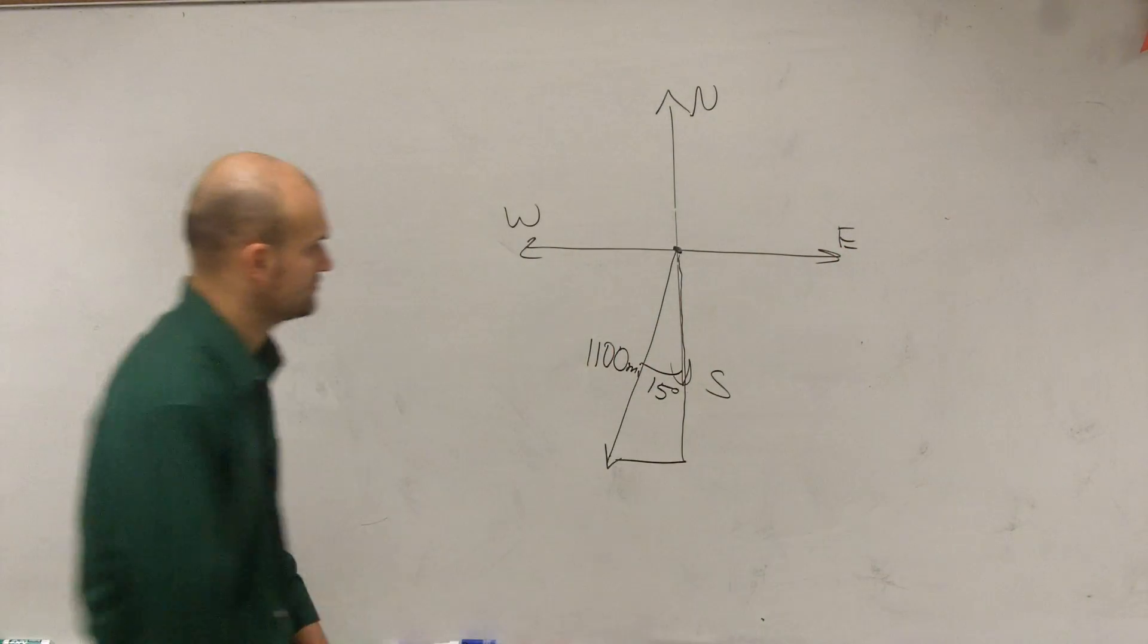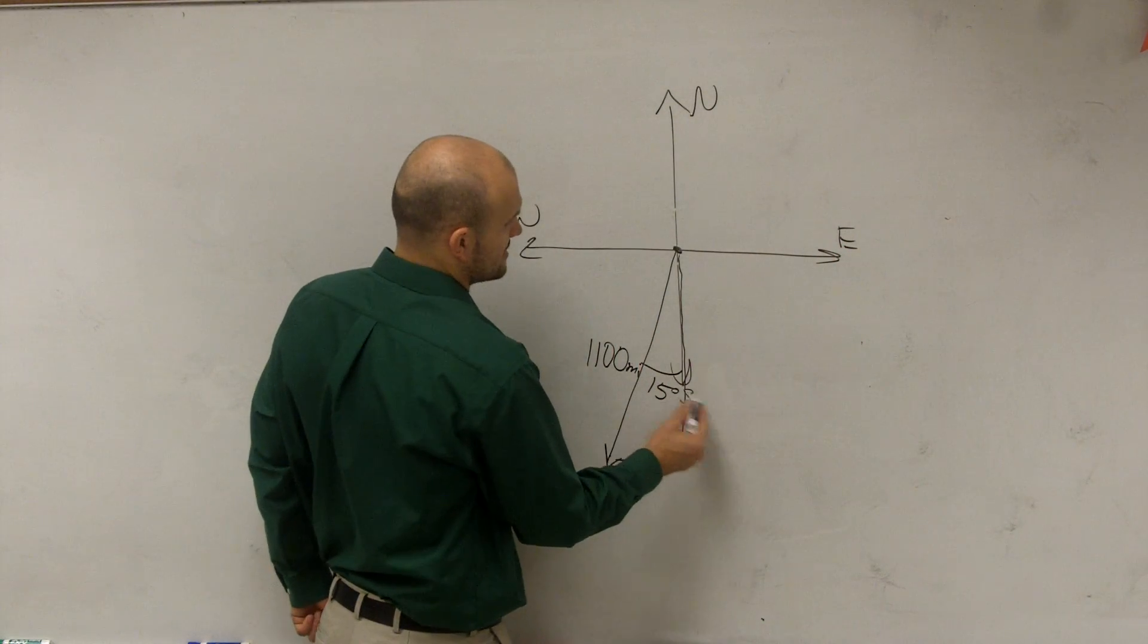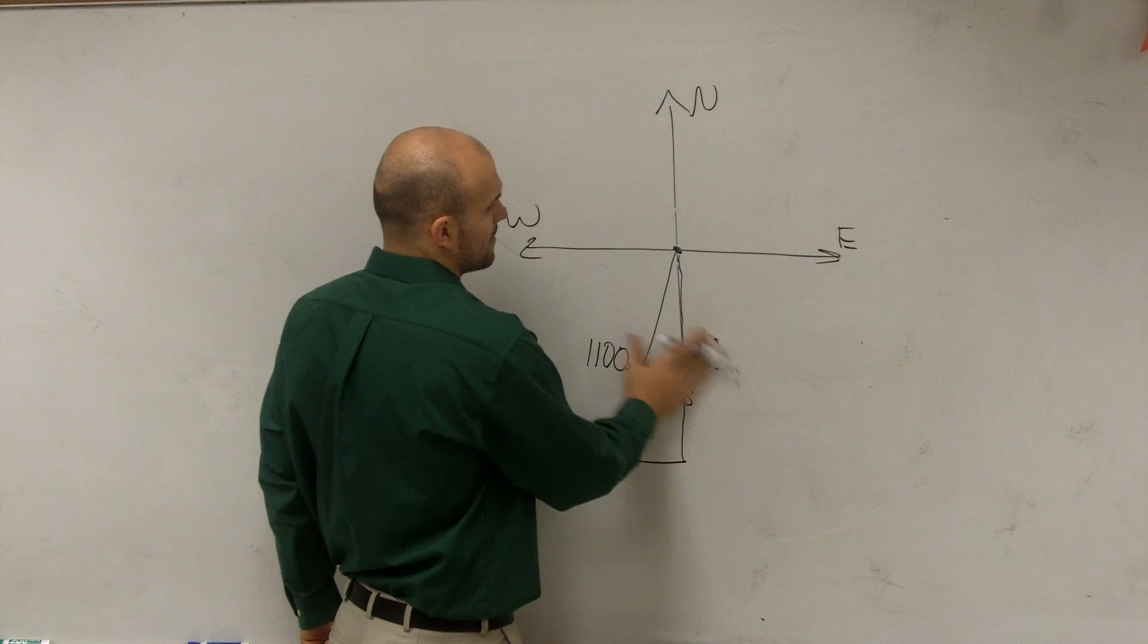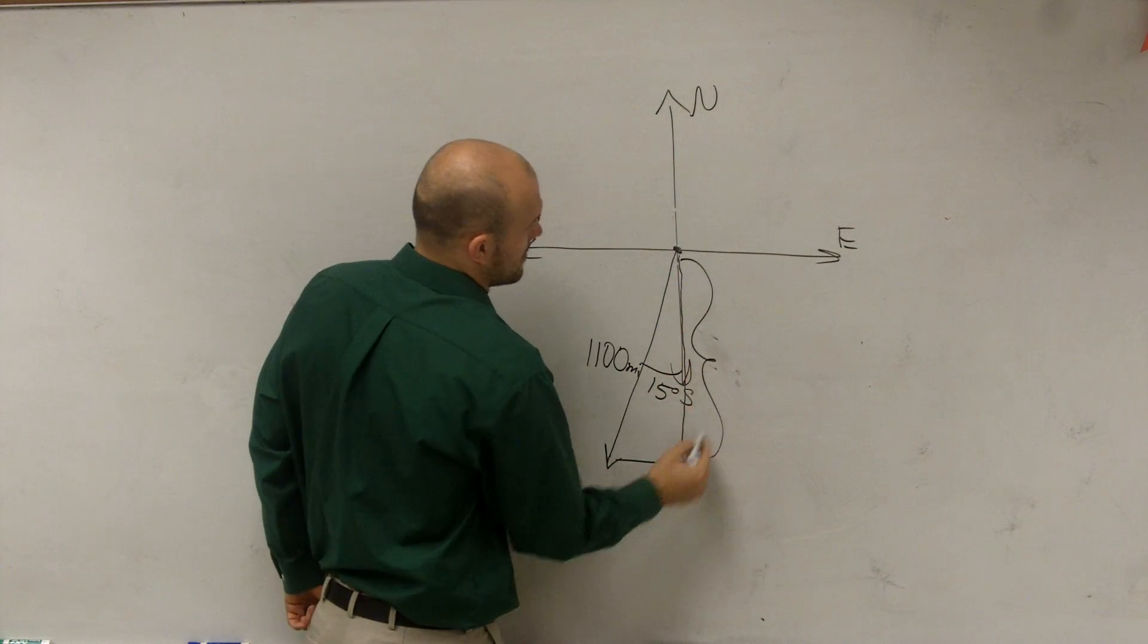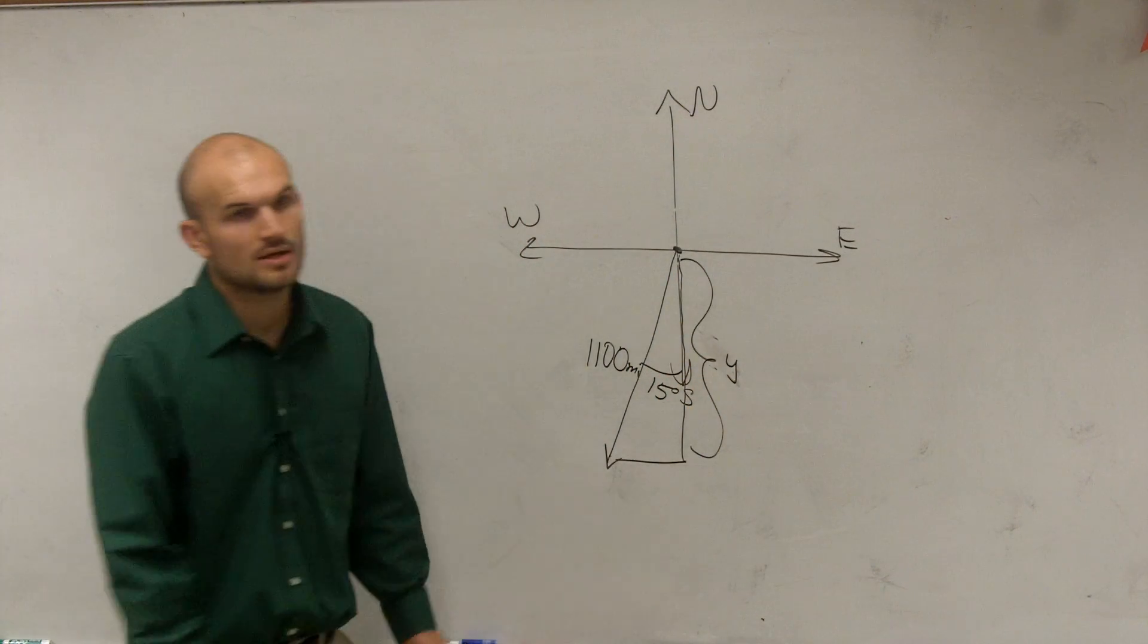So what we want to figure out, we know that's S. We want to figure out what Y is. So therefore, we need to look at where's our right triangle.